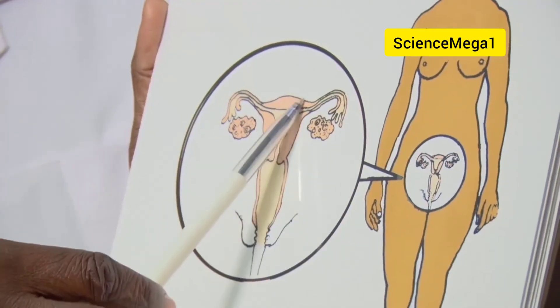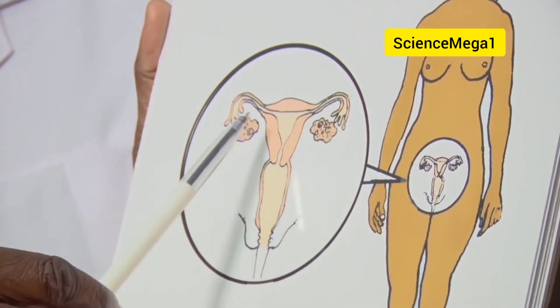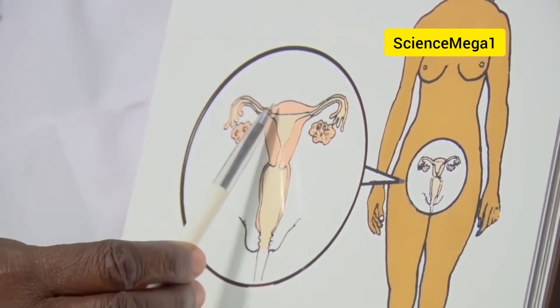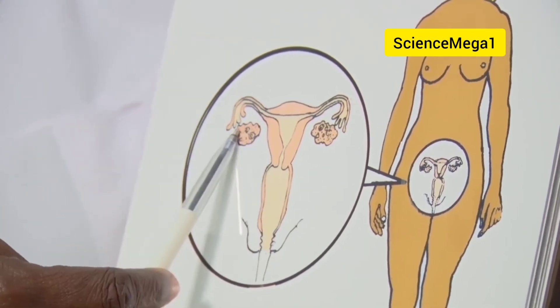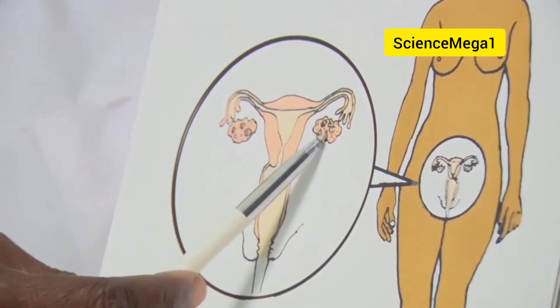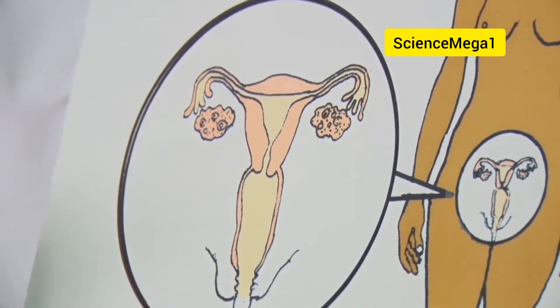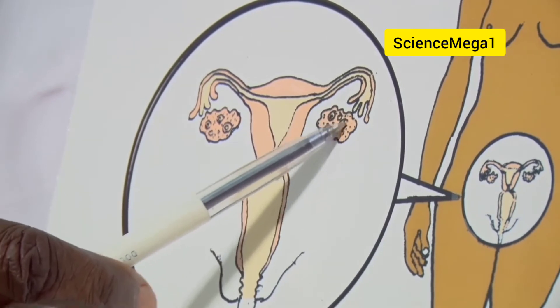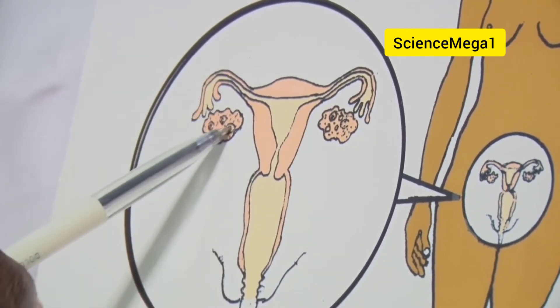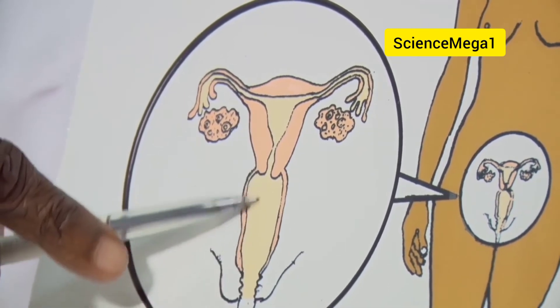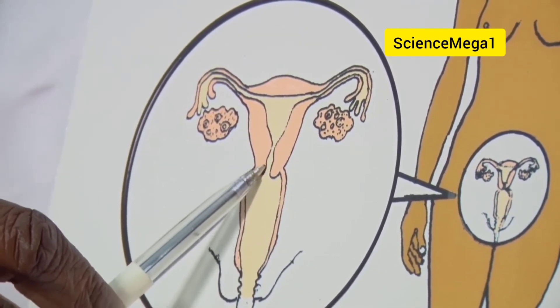Our attention will be on the female reproductive system, as you can rightly see in the drawing here. Look at the female standing with the reproductive system — the major one, which is the uterus here. This is the body of the uterus. We have the fallopian tubes; there are two, one on each side of the uterus — the left and the right. Then we have the two ovaries that contain the ovum, the eggs. Females lay eggs like a fowl, but our eggs are in the container called the ovary, left and right. And we have the vagina and the cervix — the entrance to the womb.